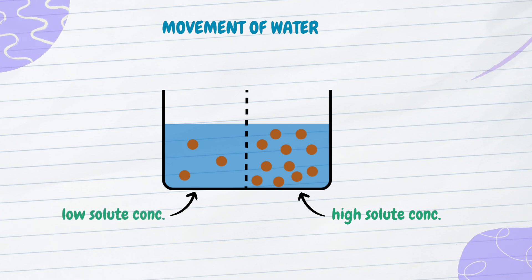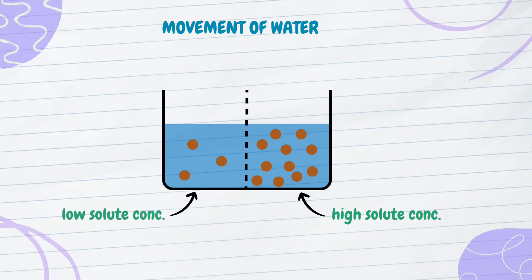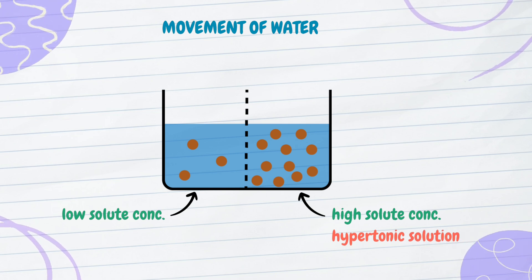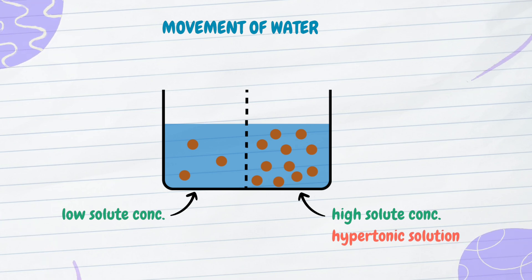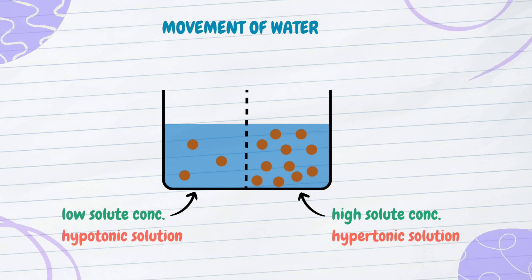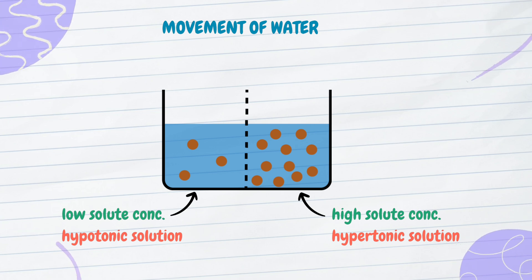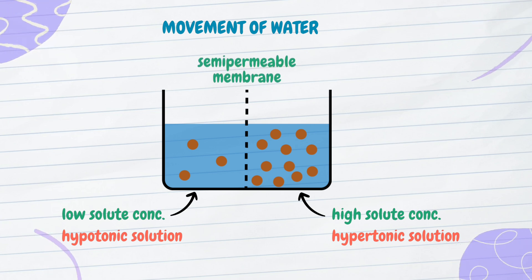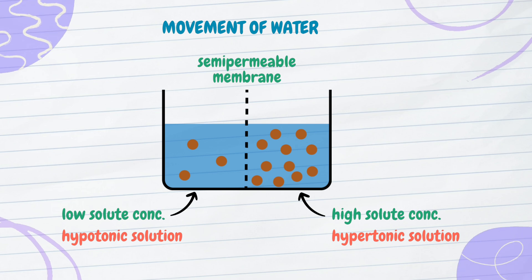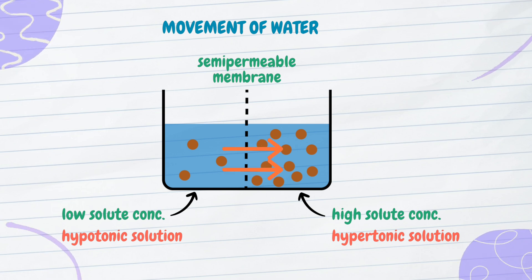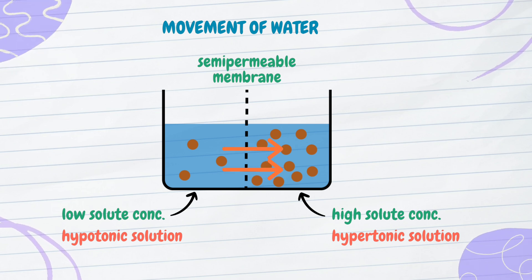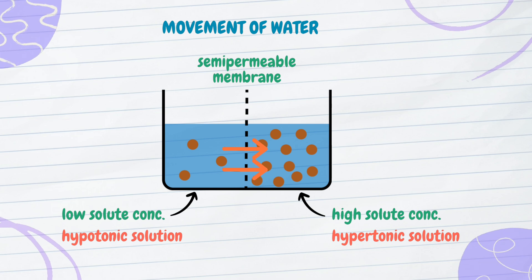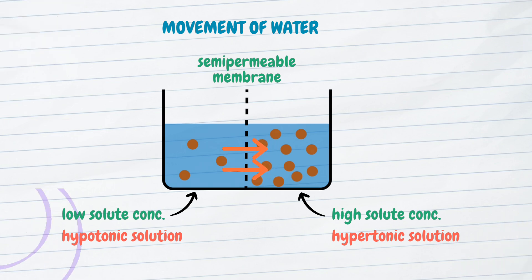A solution with a high-solute concentration is called a hypertonic solution, while a solution with a low-solute concentration is called a hypotonic solution. Second, the two solutions must be separated by a semi-permeable membrane. Water molecules move by osmosis from the hypotonic solution to the hypertonic solution until the concentration of both solutions equalizes.